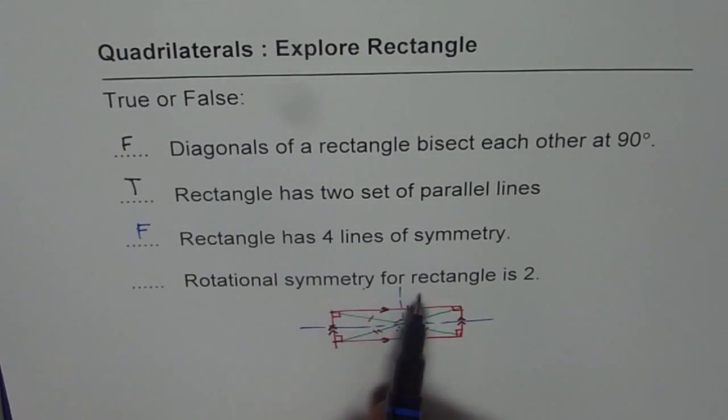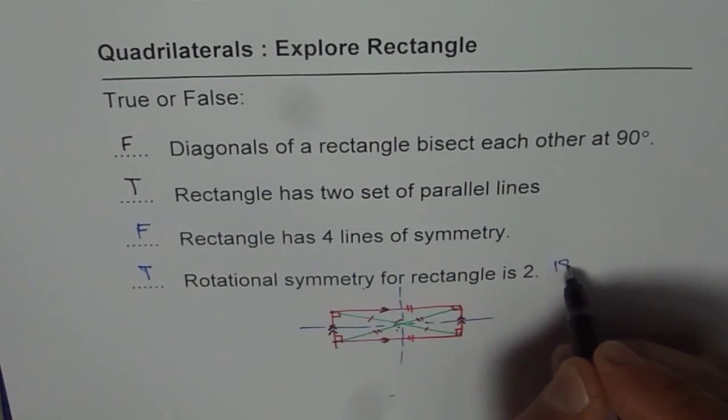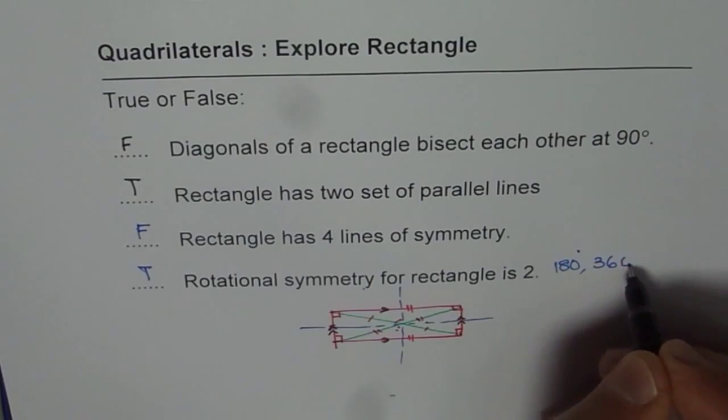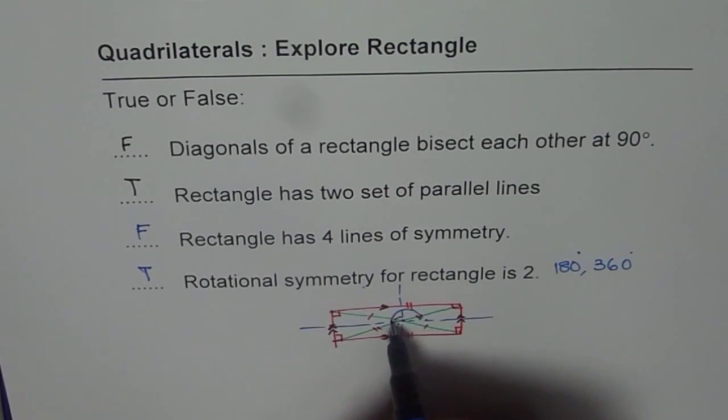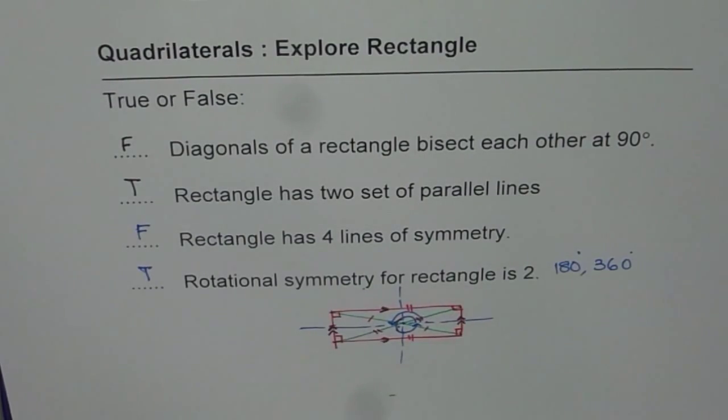Rotational symmetry for a rectangle is two. That is true. And the angles are 180 degrees and 360 degrees. So if you rotated about this point 180 degrees or one full circle, you get the same rectangle. That is rotational symmetry.